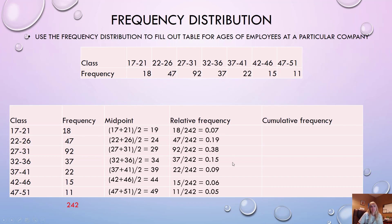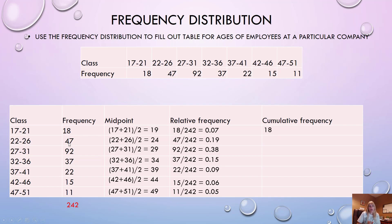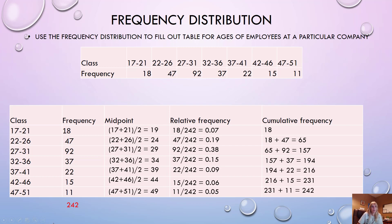Because the program might ask you to round a particular way, you might get slightly different values, but the relative frequencies should add up to one — sometimes 0.999 due to rounding, but within the ballpark. Cumulative frequency: start at the first value, then each subsequent one adds the value before it. If done correctly, you should get 242 at the end.